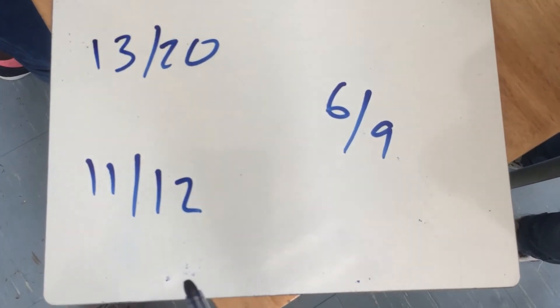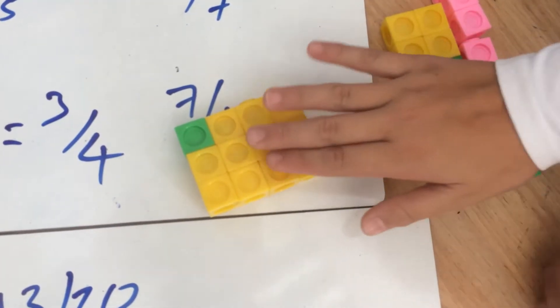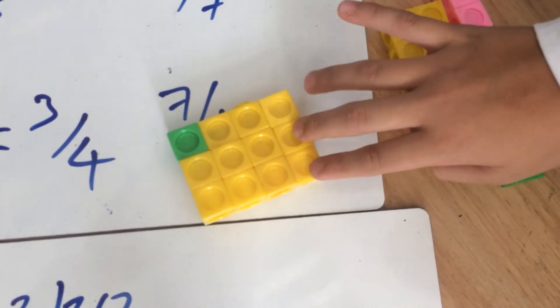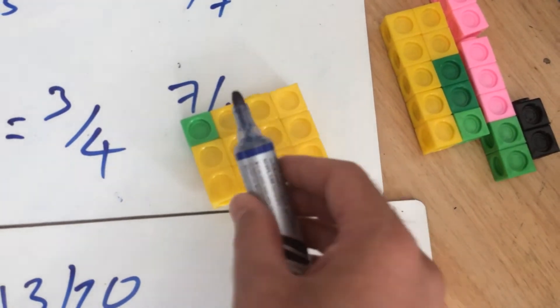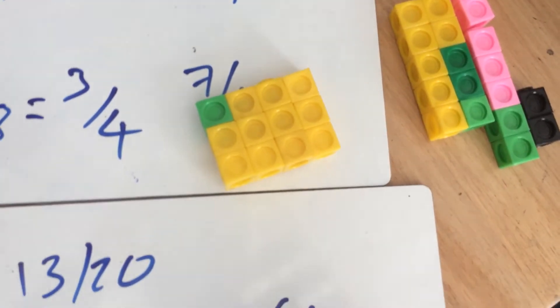We have eleven twelfths. Here there is eleven yellow cubes out of twelve. Okay. So eleven yellow out of a total of twelve.